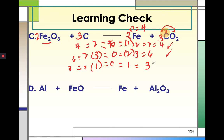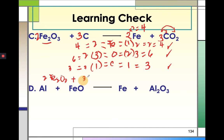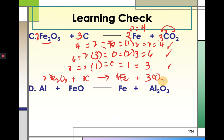Checking carbon: three atoms in the reactant side, and three in the product side — balanced. Our balanced equation is: 2Fe2O3 + 3C → 4Fe + 3CO2. We must make sure they have the same number of atoms both in the reactants and in the product side.